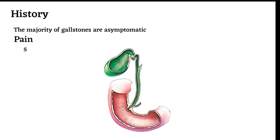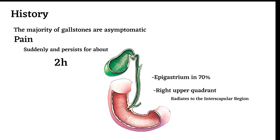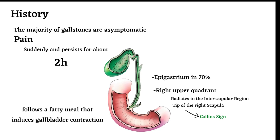The term biliary colic is a misnomer because the pain does not rhythmically increase and decrease in intensity. Typically, the pain occurs suddenly and persists for about two hours. It's usually felt in the epigastrium in 70 percent of patients or right upper quadrant and radiates to the interscapular region or the tip of the right scapula, which is called Kehr's sign, and often follows a fatty meal that induces gallbladder contraction.